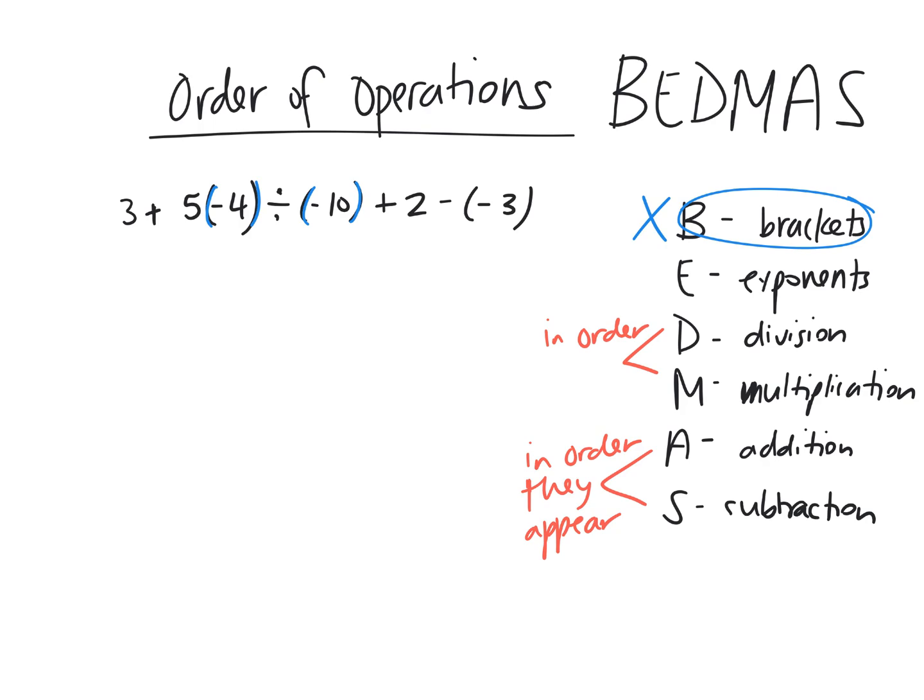Do we have exponents? Like, for example, 2 to the power of 2. Is there anything with an exponent? No. Is there division and multiplication? We have to simplify these in the order they appear. So let's look at all the operations. I'm going to highlight them. We have addition, right? Then what does this bracket tell us? What operation? Addition, subtraction, multiplication, or division?